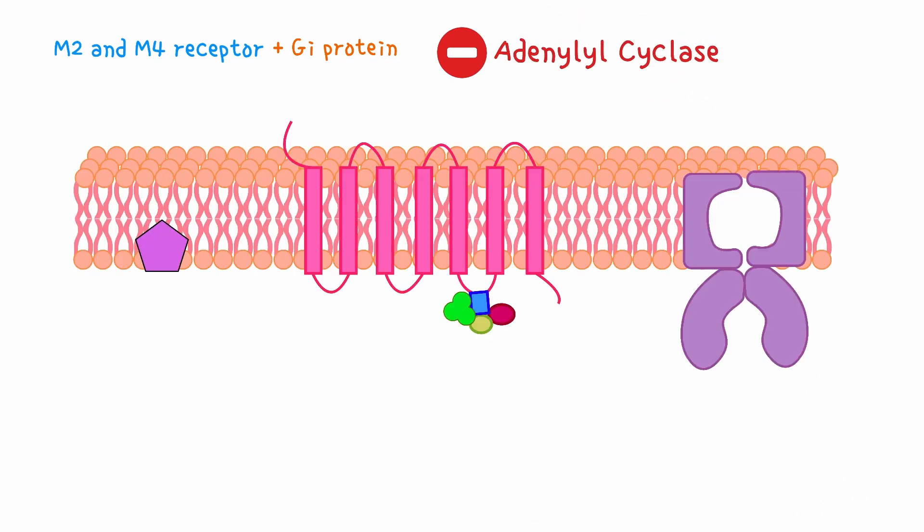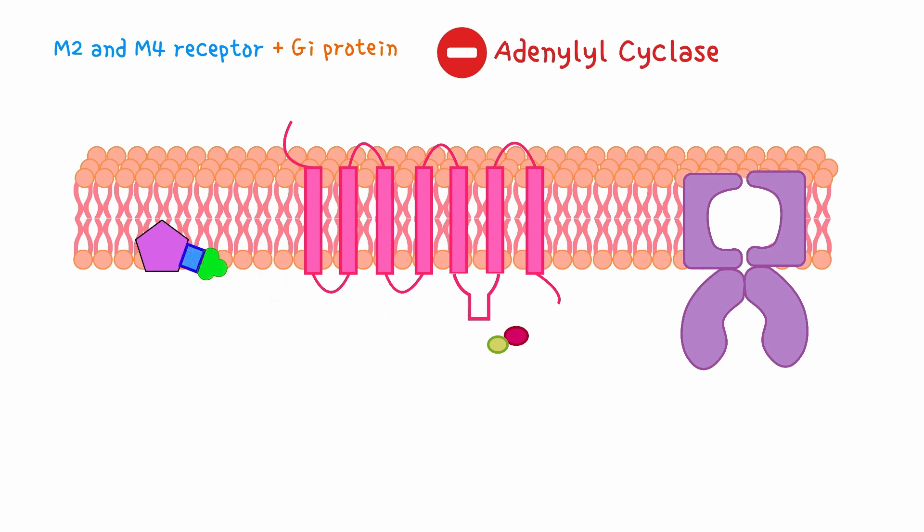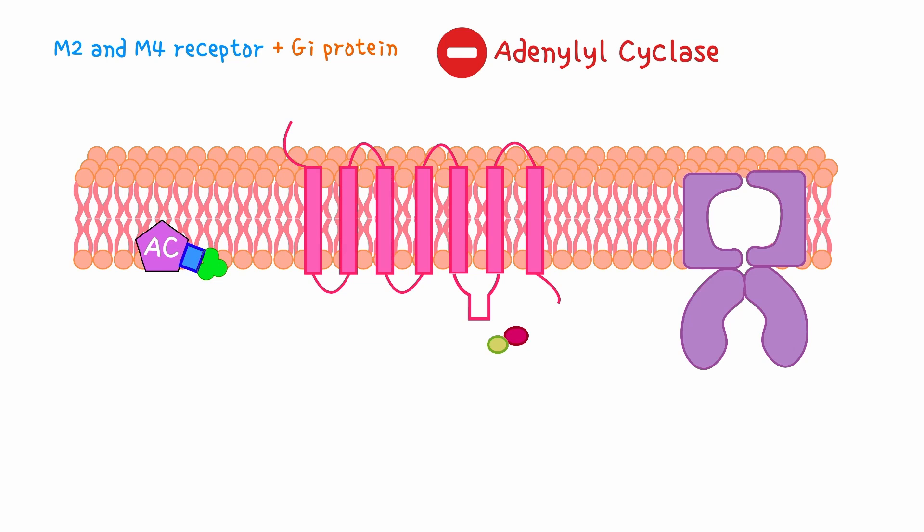The alpha part of the GI subunit leaves the receptor and binds to and inhibits the enzyme adenylyl cyclase. Since AC is inhibited, it converts less ATP into cyclic AMP. Lower cyclic AMP means less activation of protein kinase A,